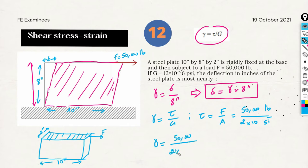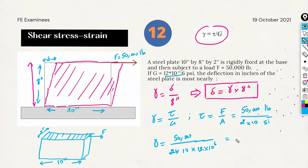Now let's calculate gamma: 50,000 divided by (2 times 10 times 12 times 10 to the 6th). Let's check unit coherence — we have pounds over square inches divided by pounds per square inch, so everything cancels and gamma is dimensionless, which is consistent with the physical meaning. Using the calculator, I found a value of 2.08 times 10 to the minus 4.